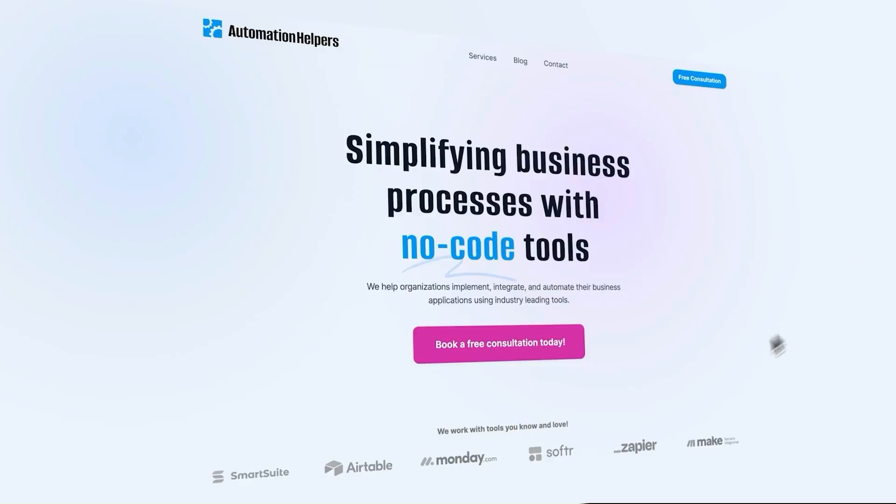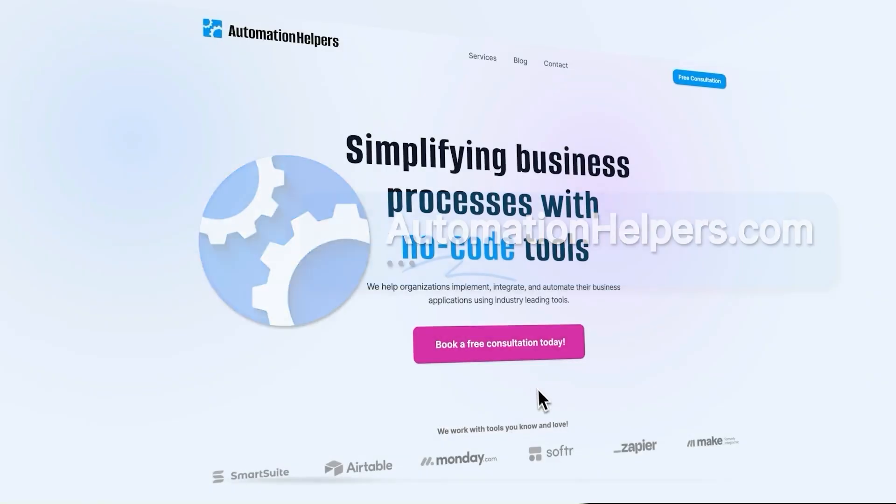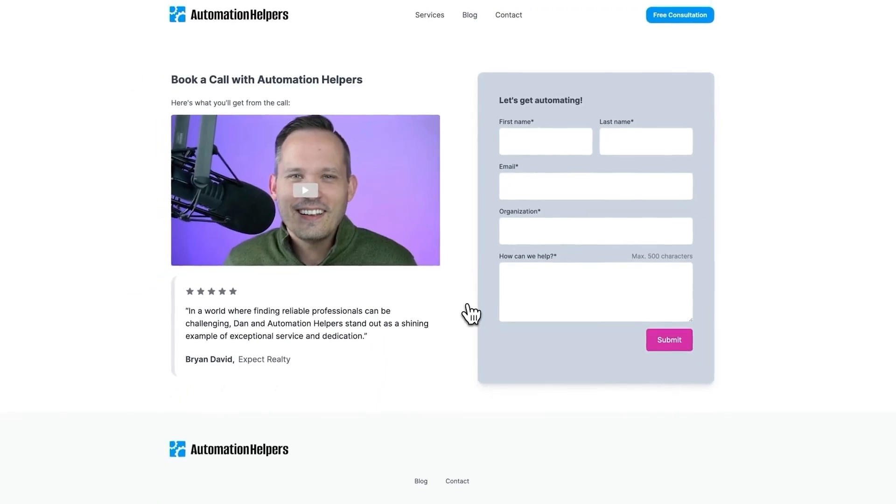There are plenty of automation tools like Relay.app and Zapier that are easy for beginners, and then there are other platforms like PipeDream and N8N that allow you to do so much more. So be sure to check those out. If you need help setting up or automating parts of your business, don't hesitate to reach out to us at automationhelpers.com. Our team of experts are offering a free 30-minute consultation, so book yours today.